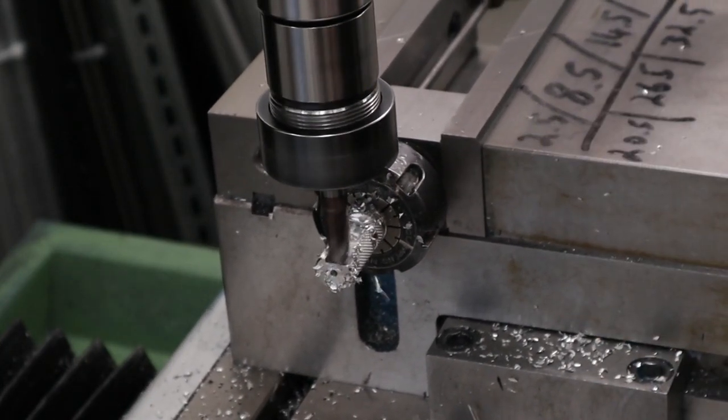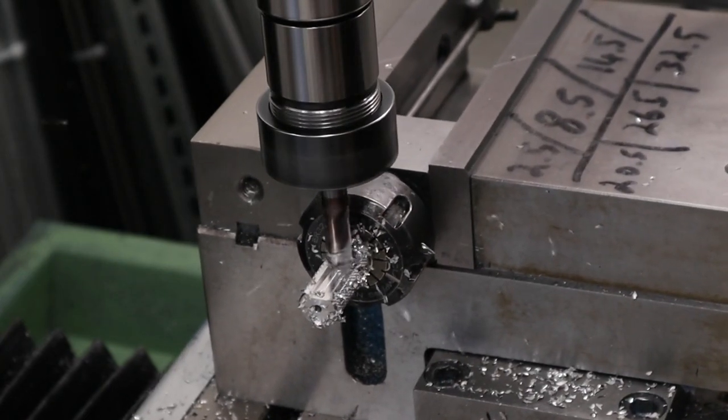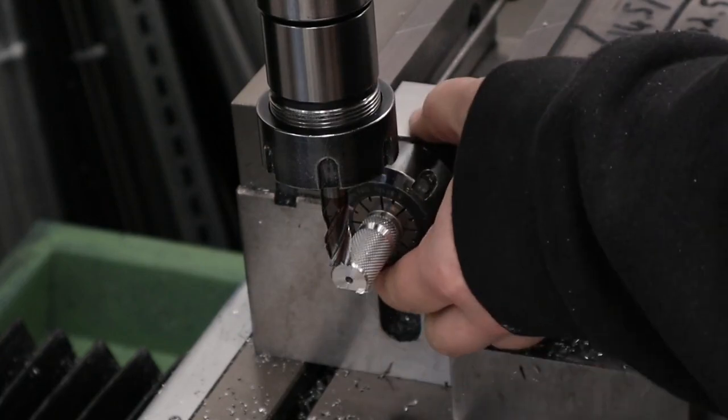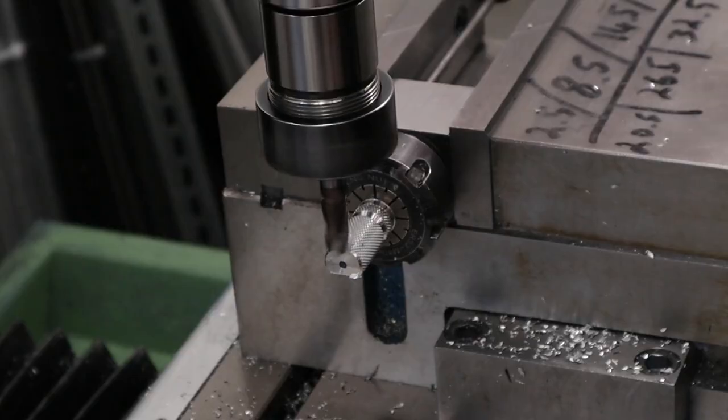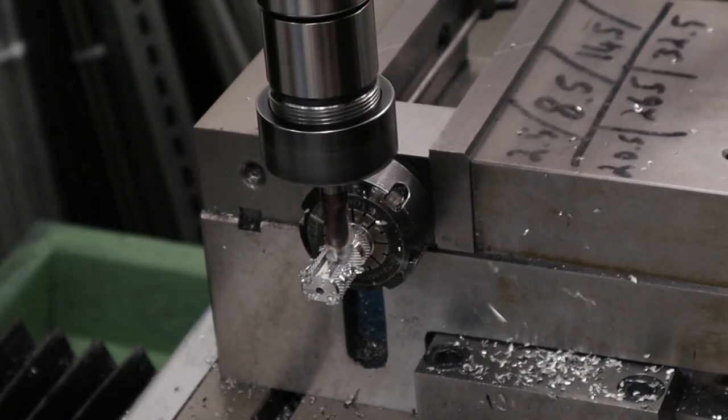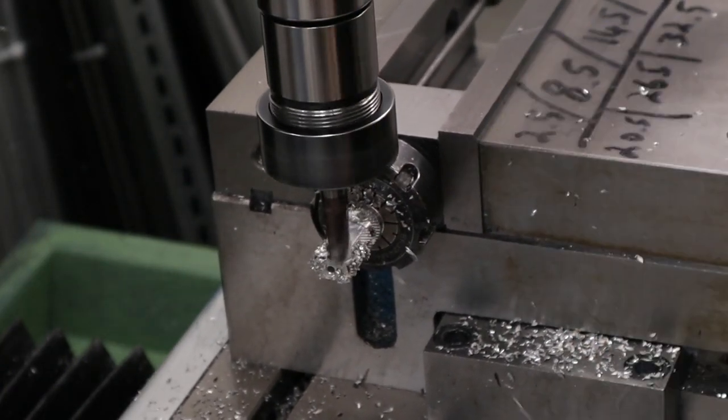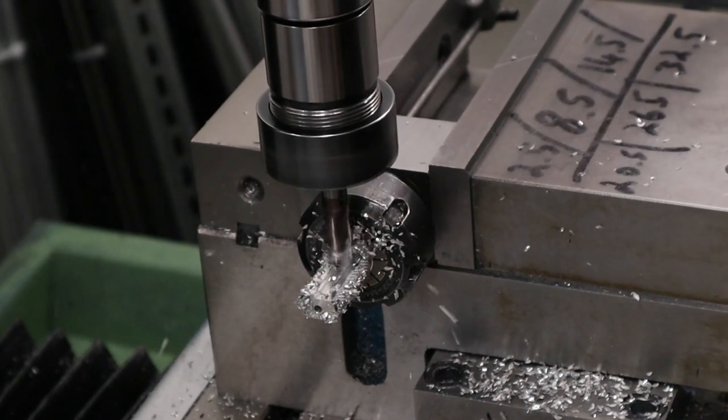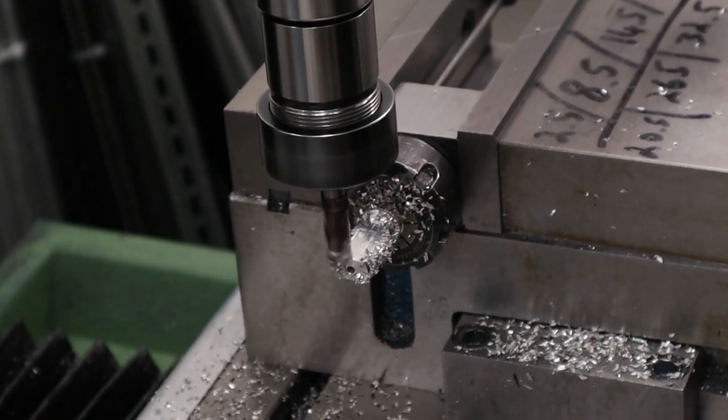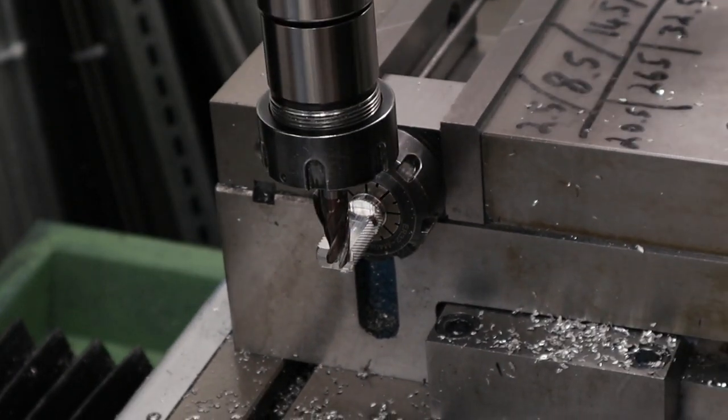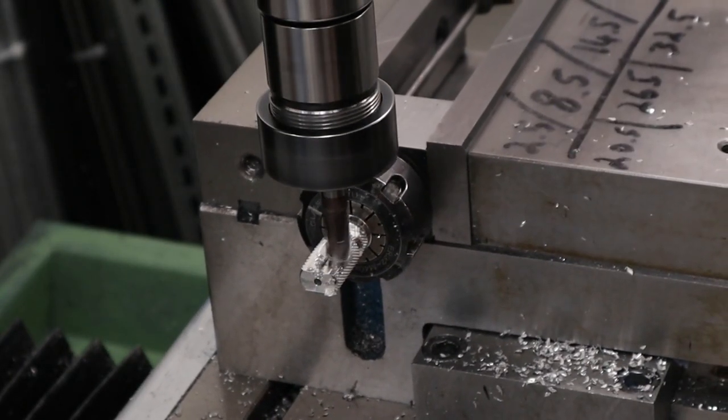With our position successfully found we can move on to the first operation which is taking the trigger down to width. First touching the end mill off on the top of the material, feeding down three and a half millimetres and then removing that material from one side. Once it's been removed we can loosen the vice, rotating the piece 180 degrees in the vice, tightening everything back up and then taking the same amount of material off from this side.